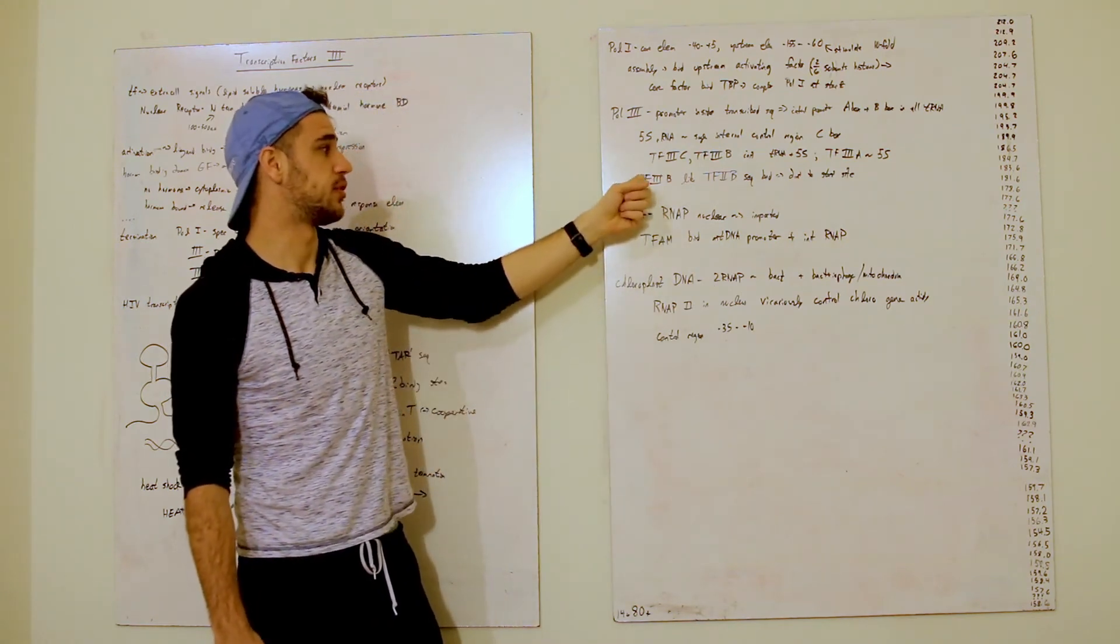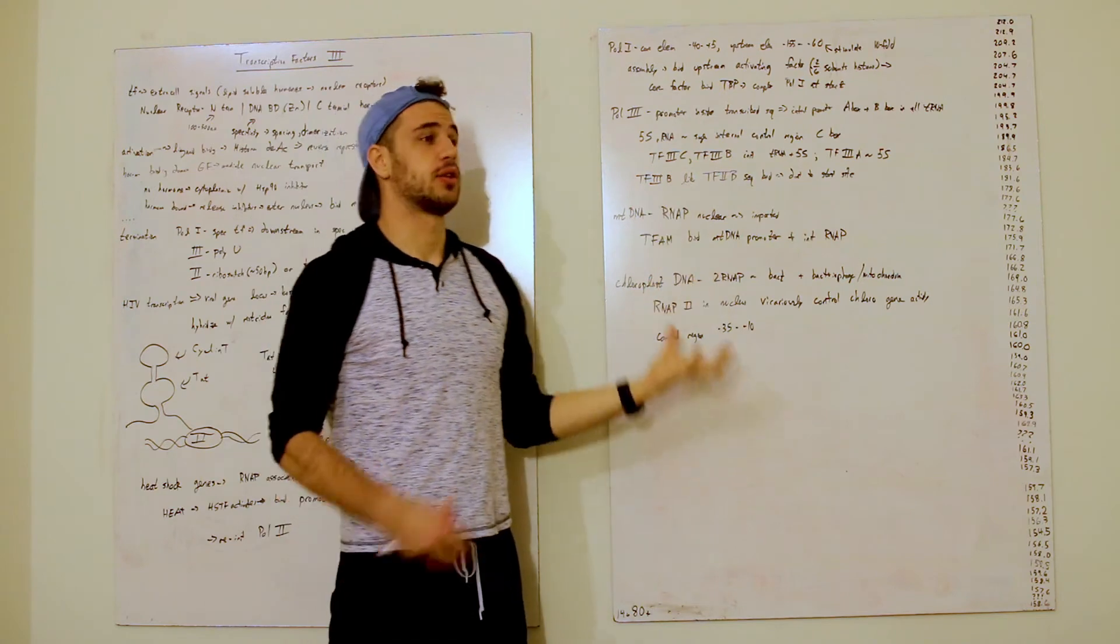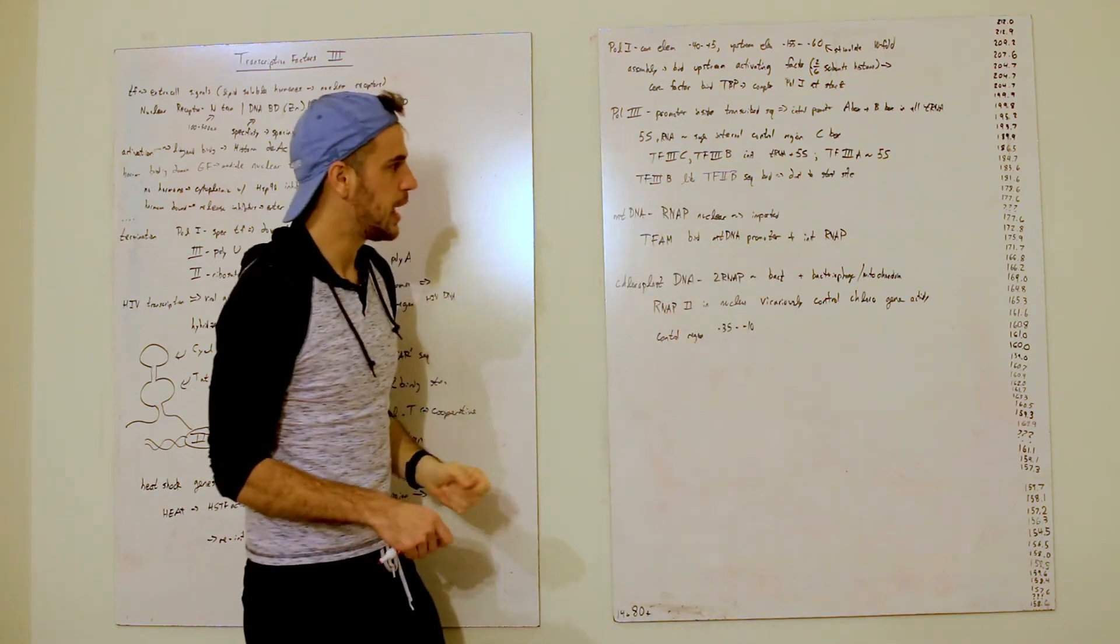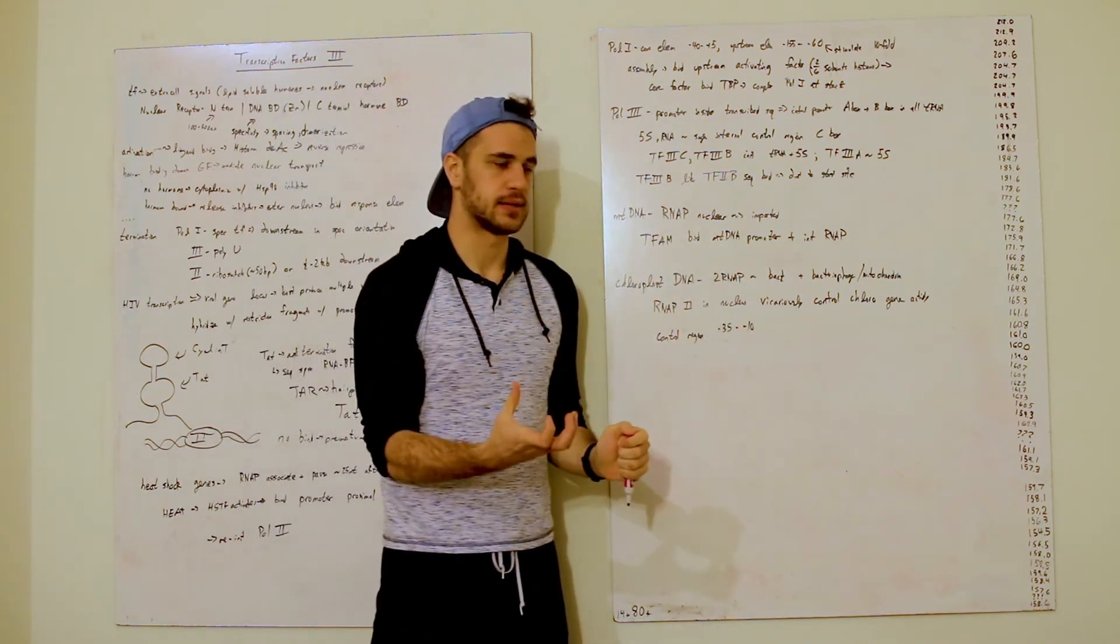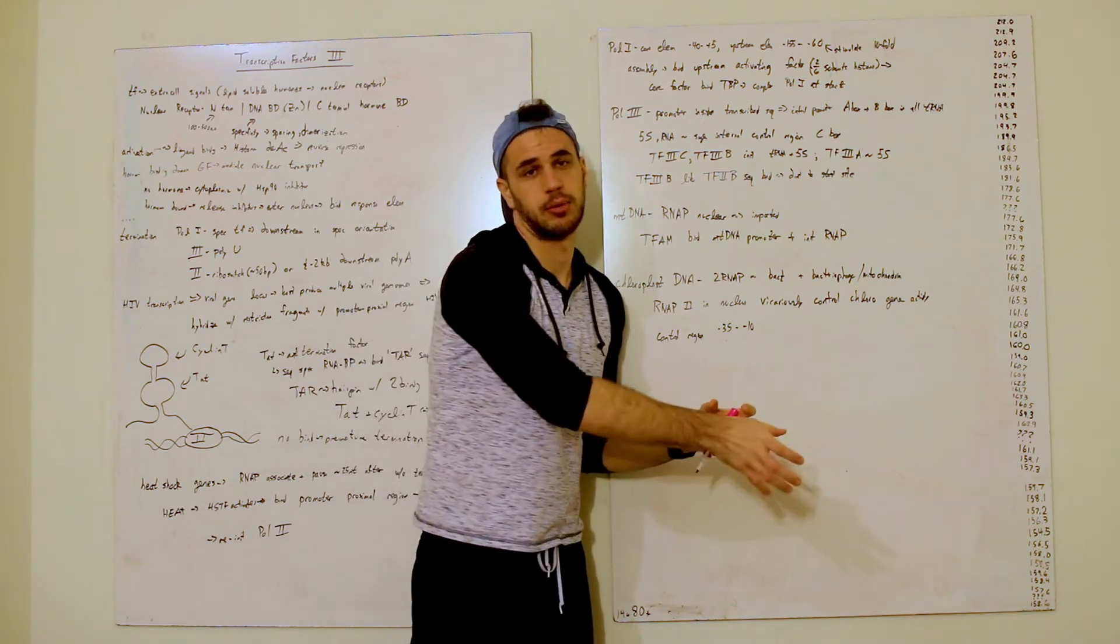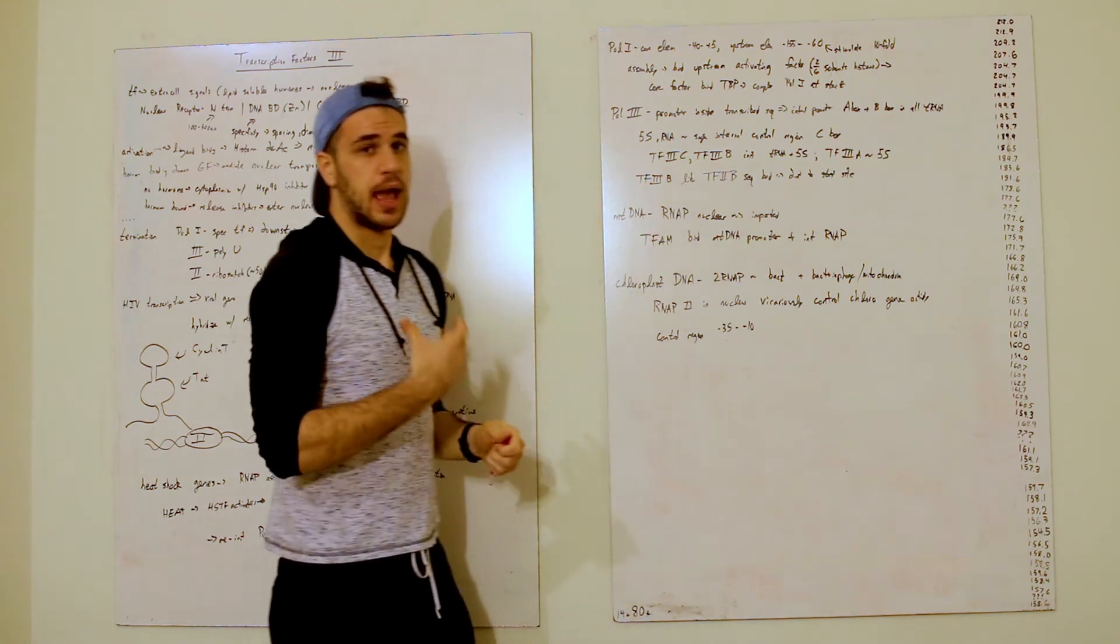And finally, you've got TF3B, which is actually a lot like TF2B, which is in polymerase II, and it will actually bind the sequence and direct the polymerase to these starts.